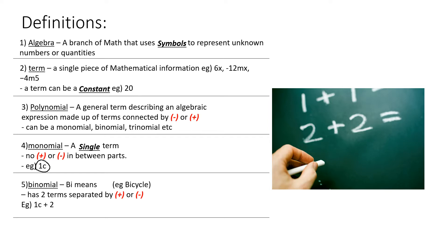Number 5, Binomial: bi means two — example, bicycle. It has two terms separated by a plus or a minus. Example: 1c plus 2. From this example, one term and two terms being separated by a plus. So bi means two.